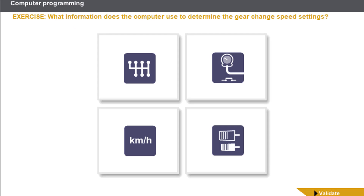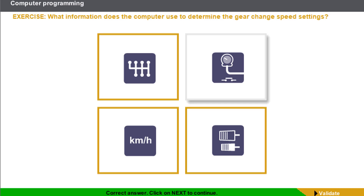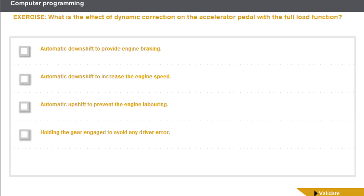We will now do some exercises before we continue. What information does the computer use to determine the gear change speed settings? What is the effect of dynamic correction on the accelerator pedal with the full load function?